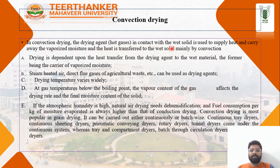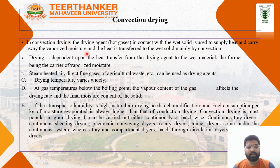In convection drying, hot gases come into contact with the solid to supply heat and carry away the vaporized moisture. Heat is transferred through the solid bed mainly by convection. Drying is dependent upon the heat transfer from the drying agent to the wet material. Drying agents such as steam, heated air, direct fuel gas, and agricultural waste can be used, and drying temperature varies widely.